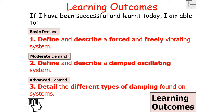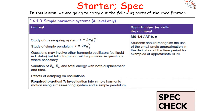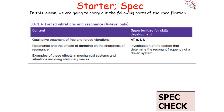By the end of today's lesson you should be able to describe and define a forced and freely vibrating system, describe and define a damped oscillating system, and detail the different types of damped systems. This falls into the AQA A-level physics specification covering simple harmonic systems, the effects of dampening on oscillations, forced vibrations, resonance, and the qualitative treatment of free and forced vibrations.